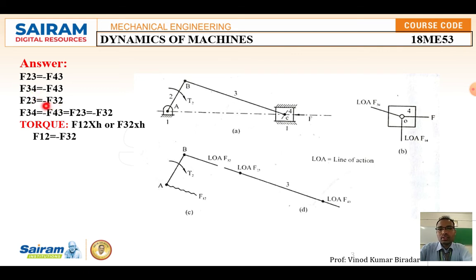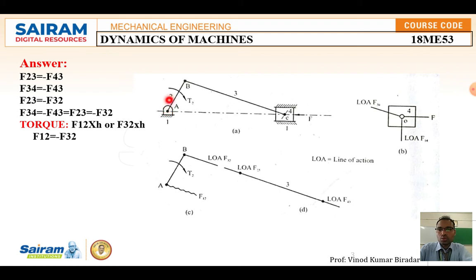Similarly, F23 equals minus F32 — the minus indicates the force acts in opposite direction. If you know one value, you can determine the forces produced in each element, which are used to find the torque. This is the free body diagram answer you write. For element two, taking the fixed point, torque T equals F12 multiplied by the perpendicular height measured from point A to B.